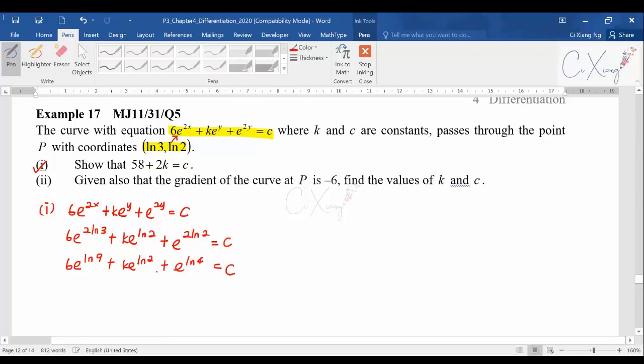For all this step I didn't do any differentiation, just substitute the values of x and y into the equation and simplify. From step 2 to step 3 you need to apply the rules of logarithms. After that, what is the value for e^(ln9)? You can use the calculator to help you. If you press e^(ln9) you should get 9. From here you should have 9, then this one you have 2, this one you have 4.